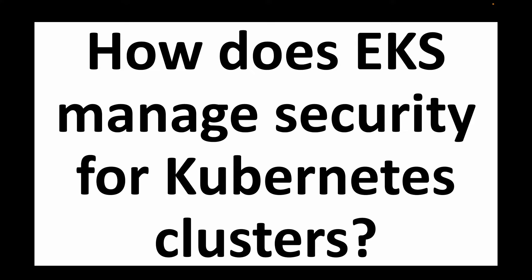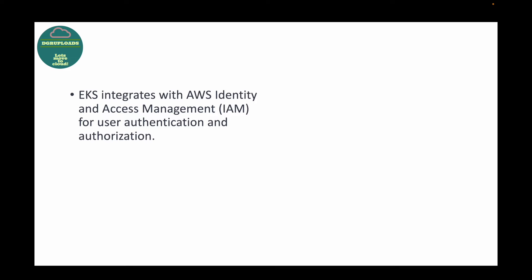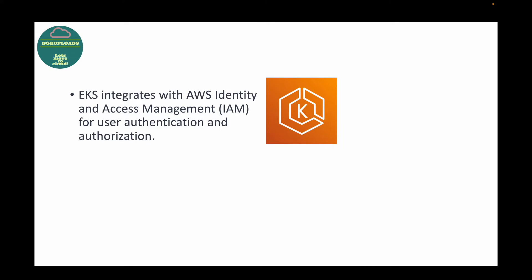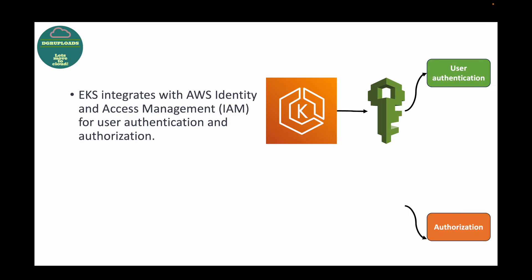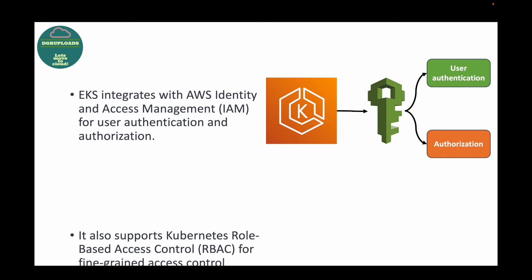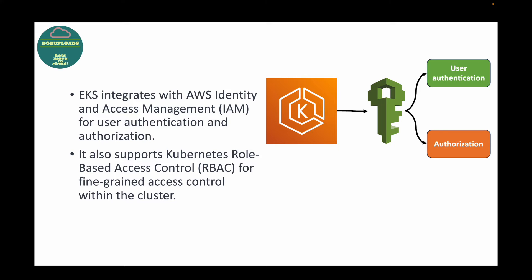The next question is: how does EKS manage security for your Kubernetes cluster? EKS integrates with the IAM service, which handles user authentication and authorization. In addition to IAM, it also supports RBAC — Role-Based Access Control — which can be used for fine-grained access control within the cluster itself. So we can utilize both IAM and RBAC to manage the security of our Kubernetes cluster.